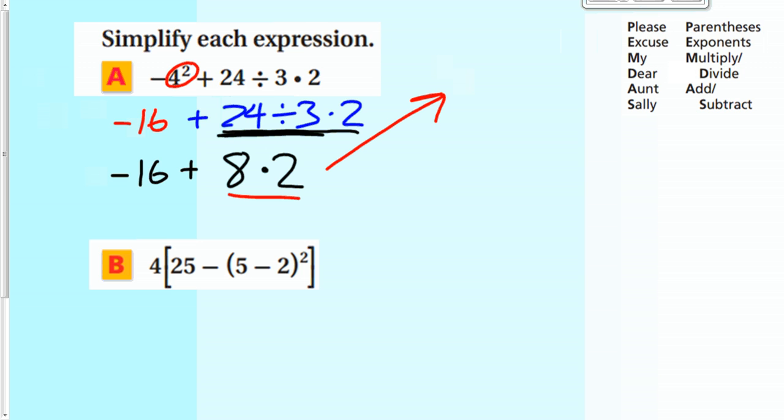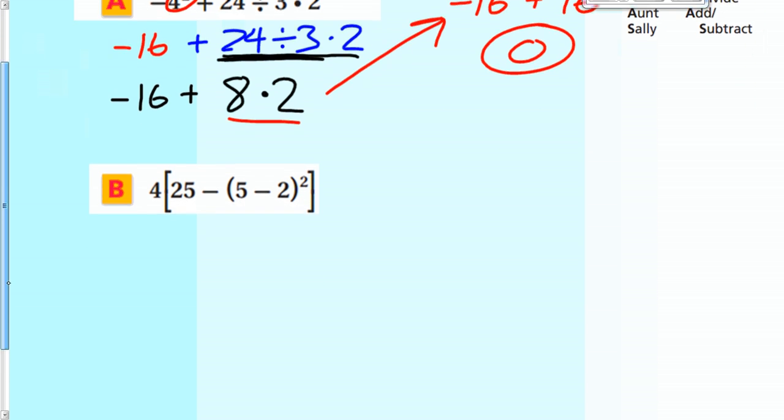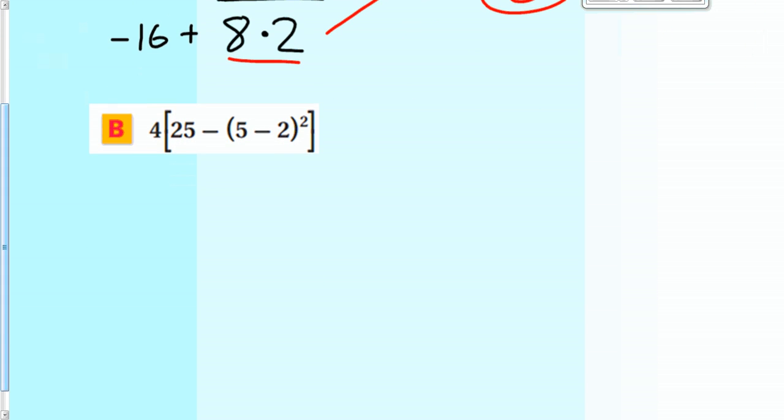So then negative 16 plus 8 times 2. Well, 8 times 2 is 16. And now we are adding. So negative 16 plus 16 is 0. Alright. So that's how that works. Letter B. Okay. We have grouping symbols. We have grouping symbols within grouping symbols. So we're going to go to the innermost grouping symbols. 5 minus 2, which is 3. The last thing we're going to do in this one is multiply by 4. So that's going to be our last step.